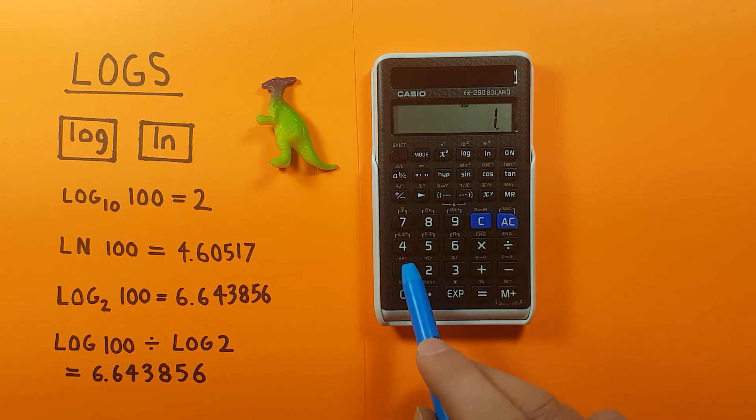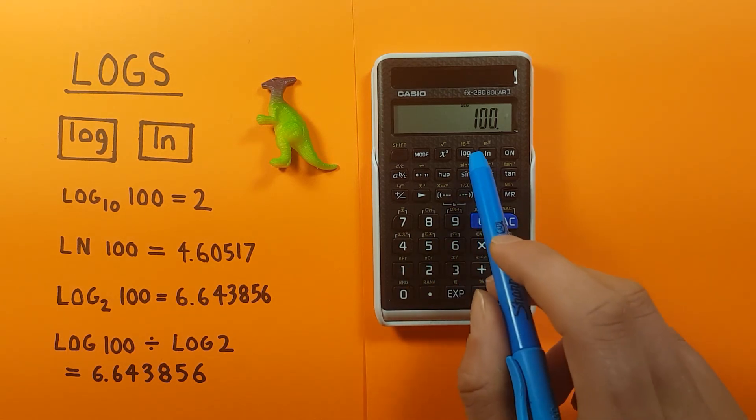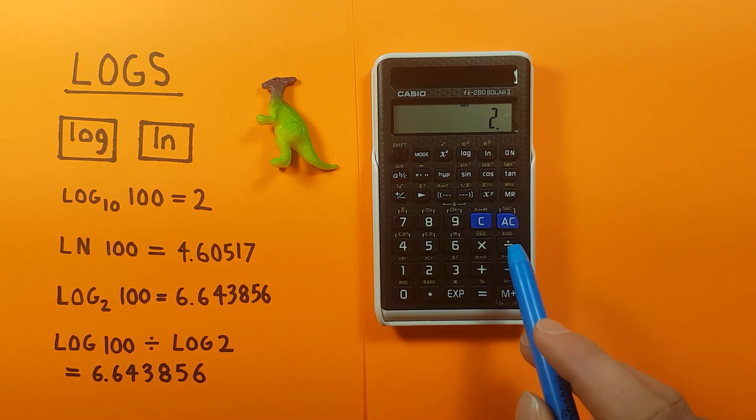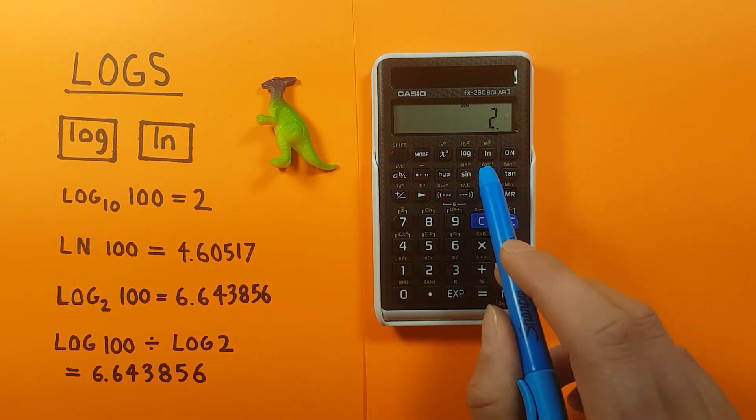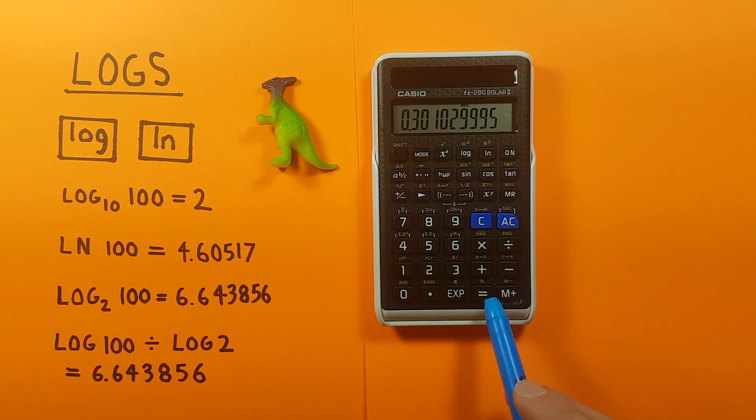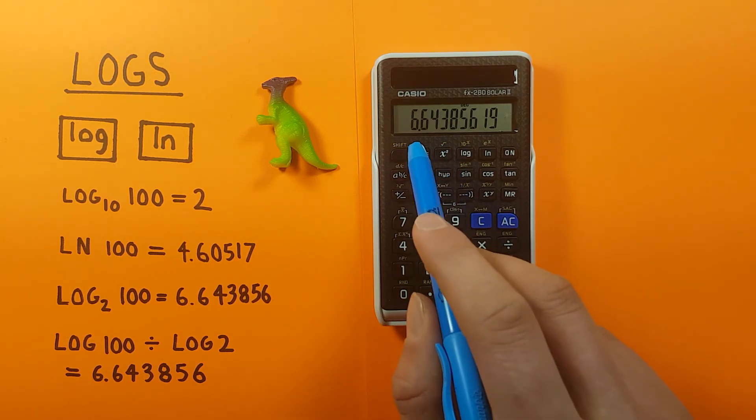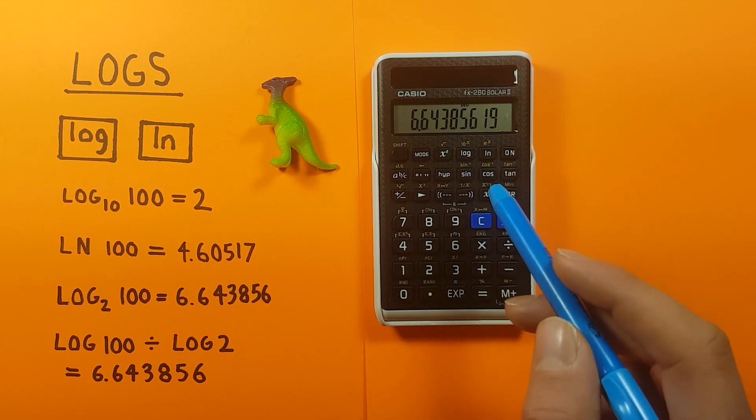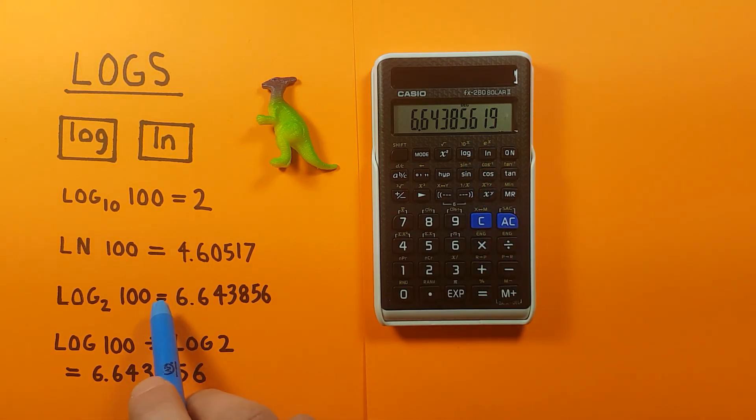So we place the 100 on the screen, press log, divided by 2 log equals, and this gives us 6.643856, which is the result of log base 2 of 100.